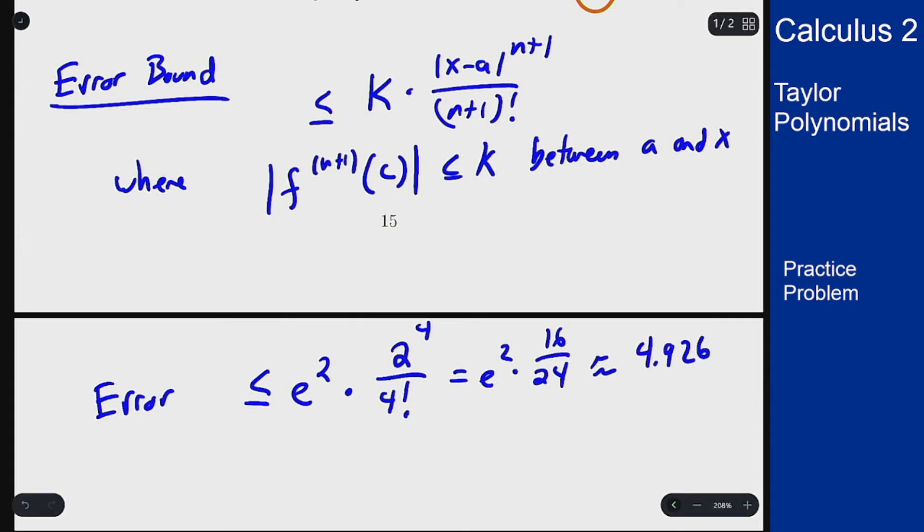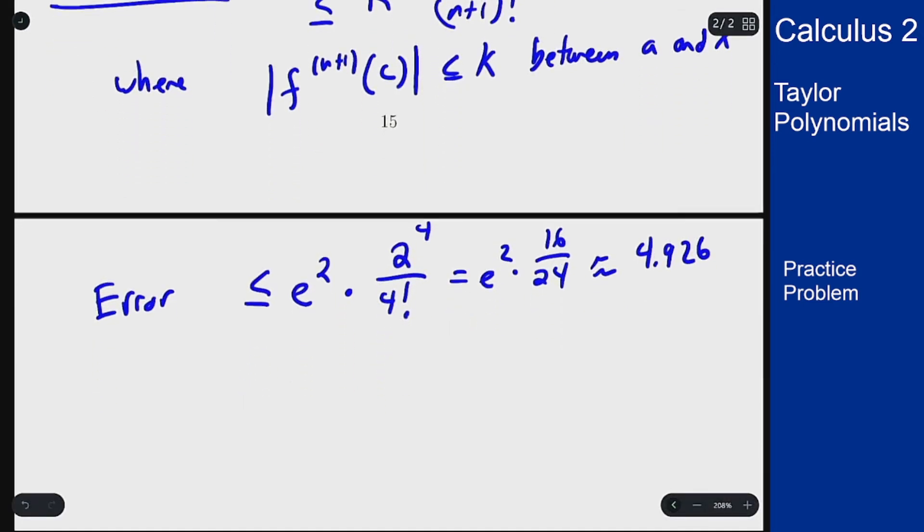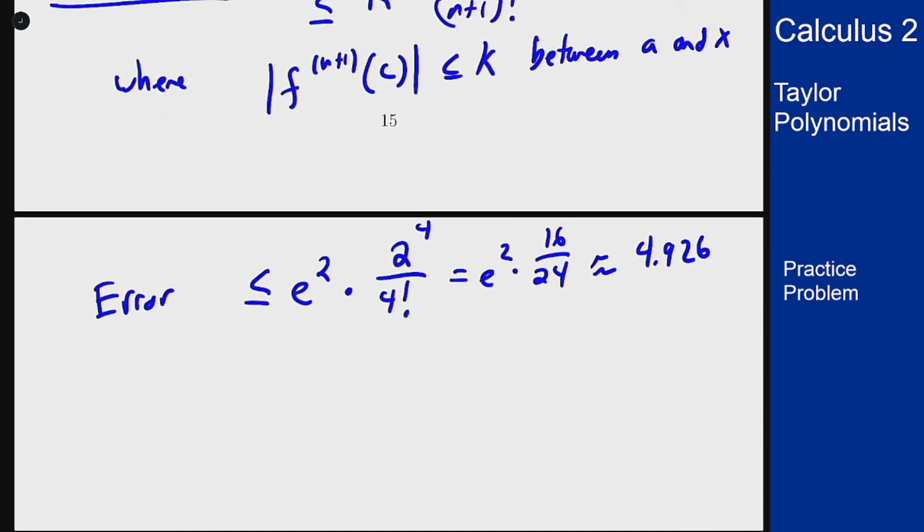So that's not a great error, that's a really big error for this sort of problem. But to see that we're on the right track we can just compare e squared itself to our value of 19 thirds. So e squared is approximately 7.389 and 19 thirds is 6.333. So we're not really that close here but we are in fact within this error bound by a fair bit. We're about one off with only three terms and that's a relatively acceptable situation.